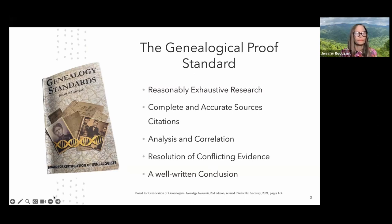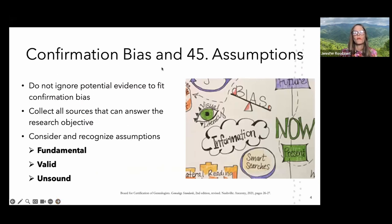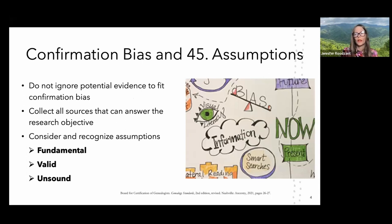The genealogy standards were put out by the Board for Certification of Genealogists as an outline for conducting quality research. There are five points. First, we always want to conduct reasonably exhaustive research — finding as many sources as we can online and offline, and considering historical context. Second, we want to have complete and accurate source citations for all data.